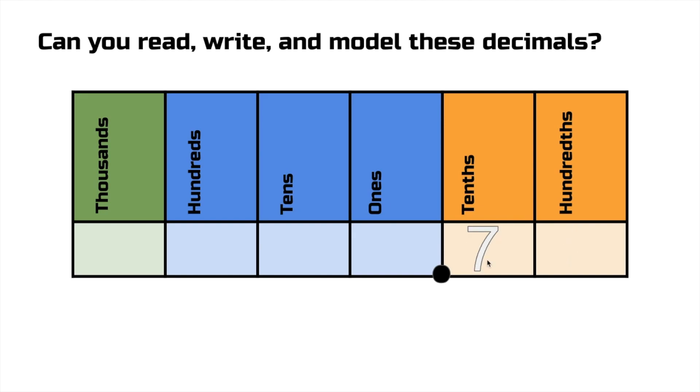Simple. We got a seven in the tenths place. Guess what, y'all? That's seven tenths. We got one and one hundredth. One and one hundredth. Two tenths, three hundredths. I see 23 hundredths.